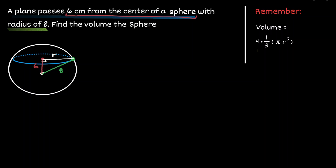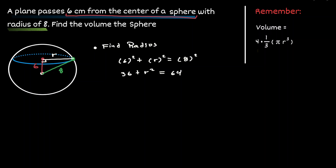Now we can use the Pythagorean theorem to find this value. We'll have six squared plus the radius squared equal to eight squared. Six squared is 36. Let's bring down the r squared, and eight squared is 64. Let's subtract 36 from both sides — that gives us a value of 28. To solve for the radius, let's take the square root on both sides. The square root of 28 is approximately 5.29.